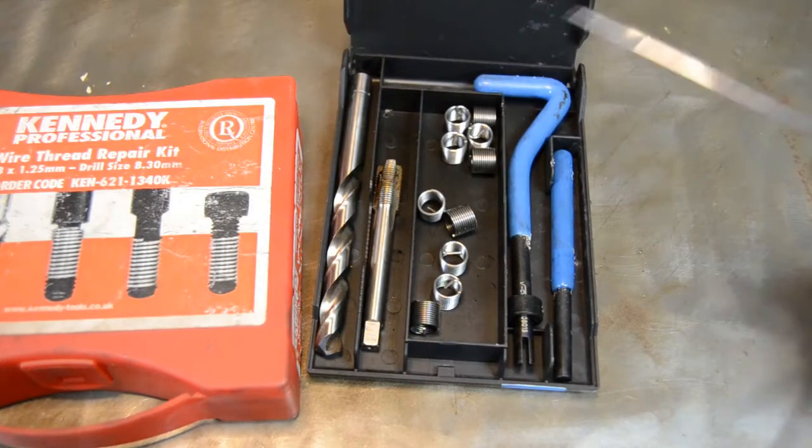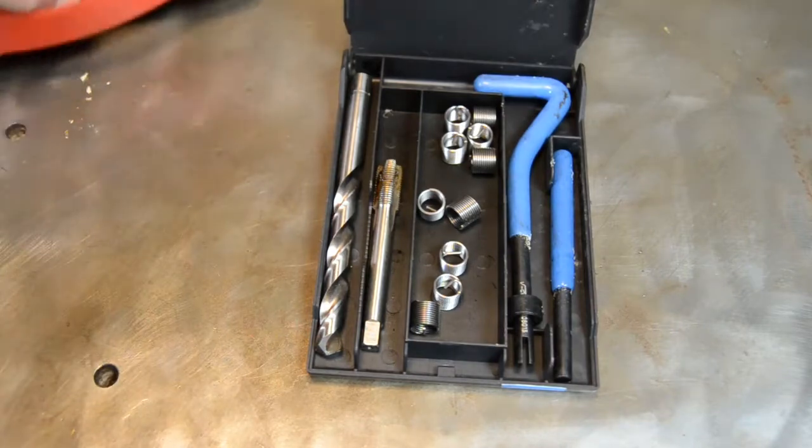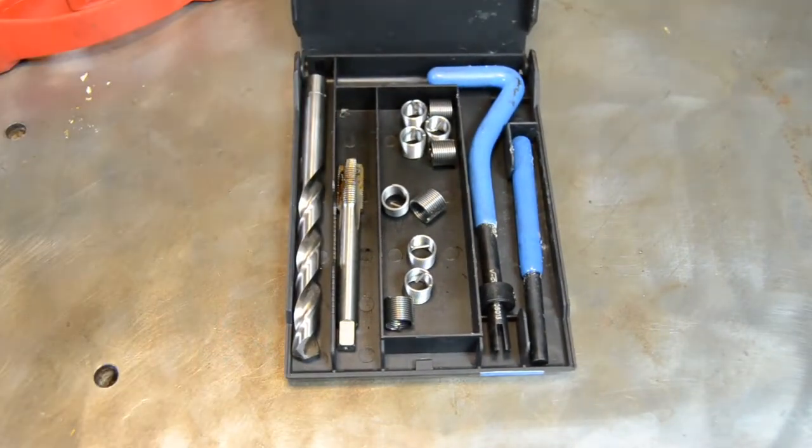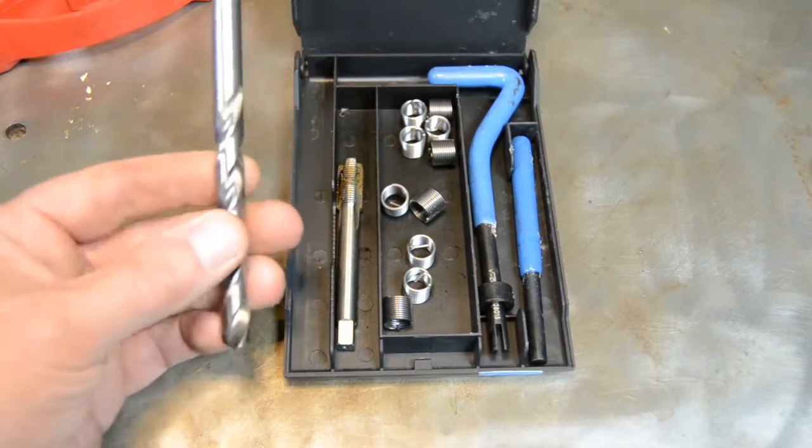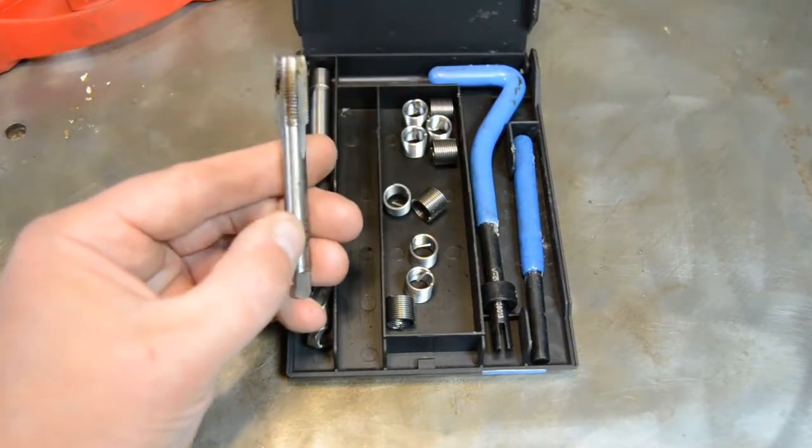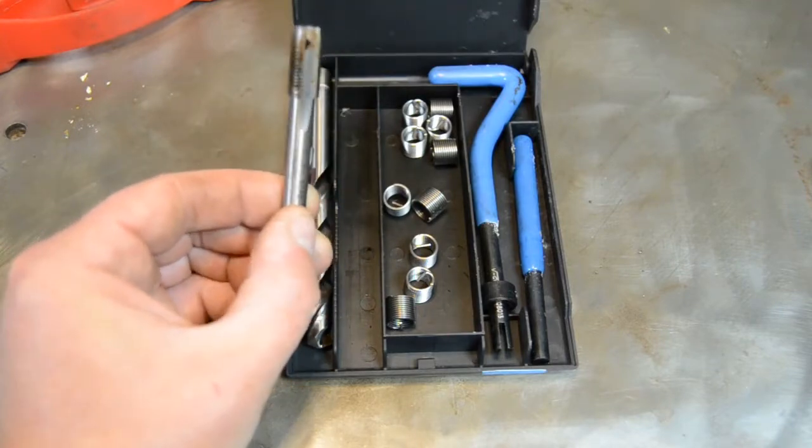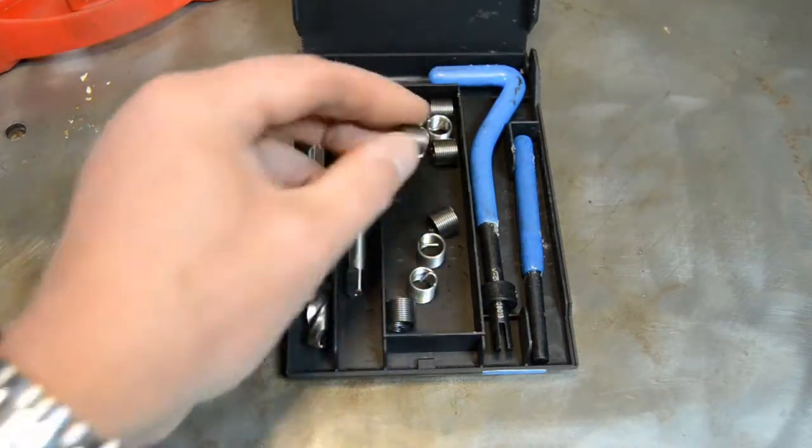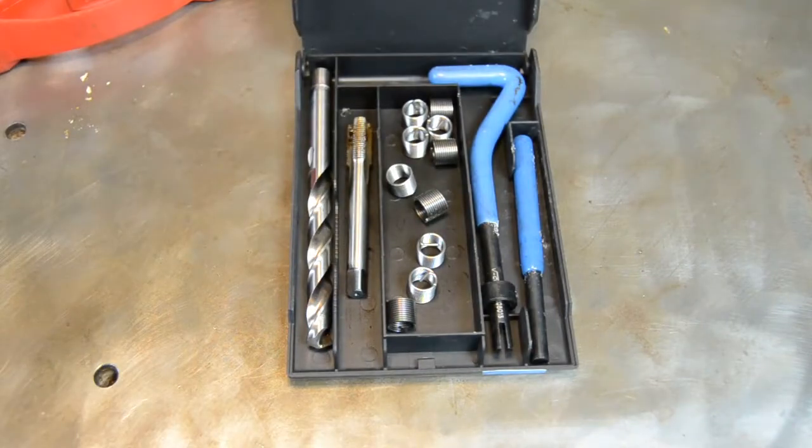Although you can buy the little inserts individually on their own, you need to buy the complete set if you're going to be able to do a decent repair. We have in here a full kit of tools. Initially we have the drill, which is the specific size to drill out the existing damaged threads, and it's the correct size for the special tap which comes with the set. It's critical you use the correct tap when you put these things together.